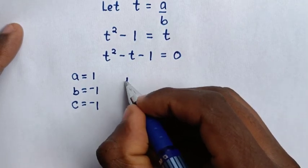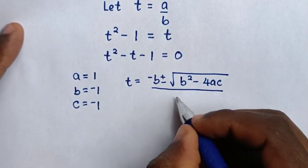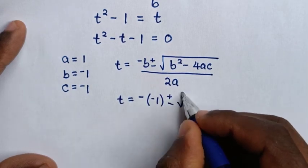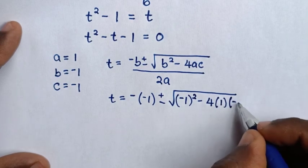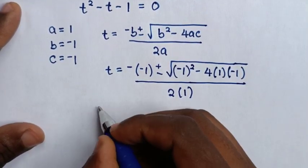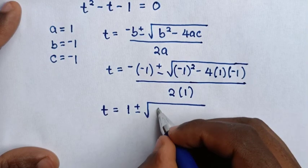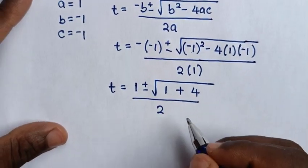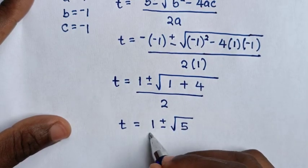From the quadratic formula, t equals negative b plus or minus square root of b² minus 4ac, over 2a. Substituting: t equals negative (negative 1) plus or minus square root of (negative 1)² minus 4 times 1 times (negative 1), over 2 times 1. This gives t equals 1 plus or minus square root of 1 plus 4, over 2, which is t equals 1 plus or minus square root of 5, over 2.